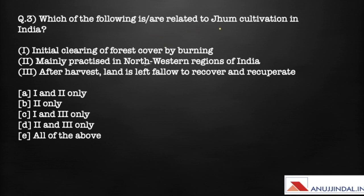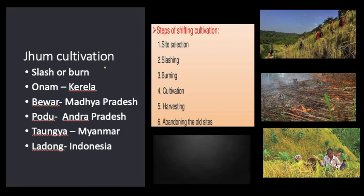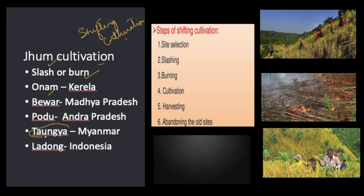The next question asks: which of the following is related to jhum cultivation? Jhum cultivation is also known as slash and burn cultivation, and also as shifting cultivation. It is called by different names according to the region — jhum in northeastern India, onam in Kerala, bewar in Madhya Pradesh, podu in Andhra Pradesh, tongya in Myanmar, and ladong in Indonesia.